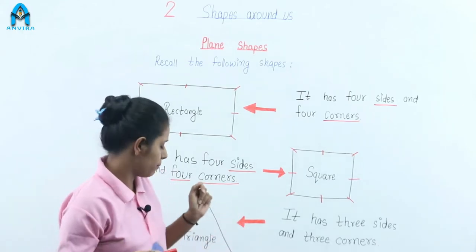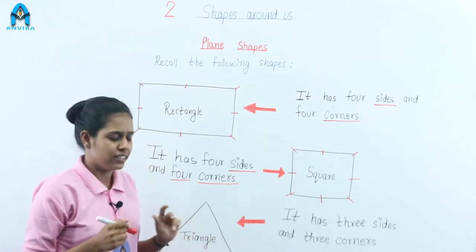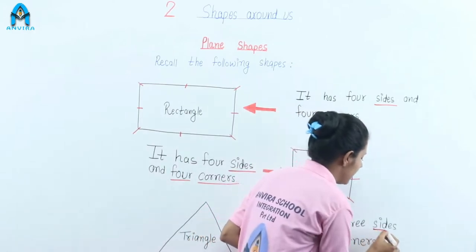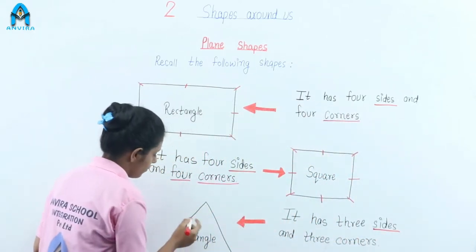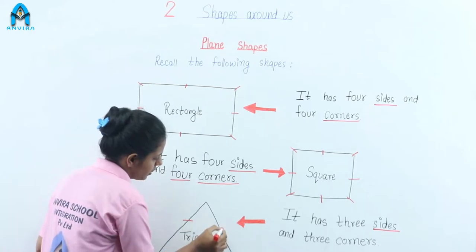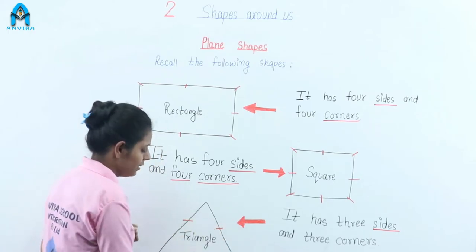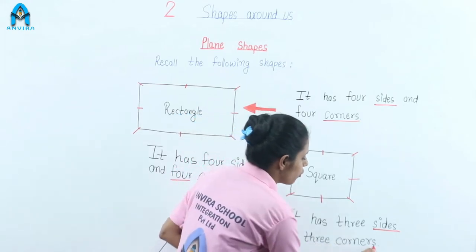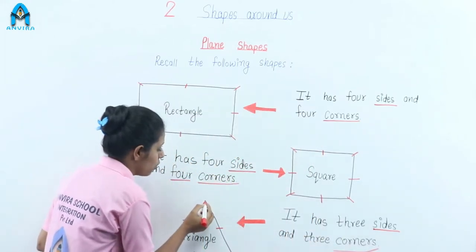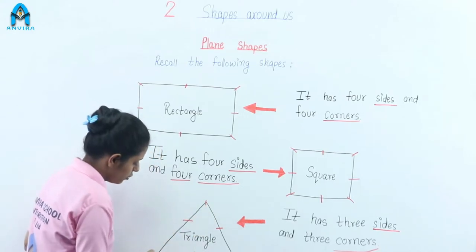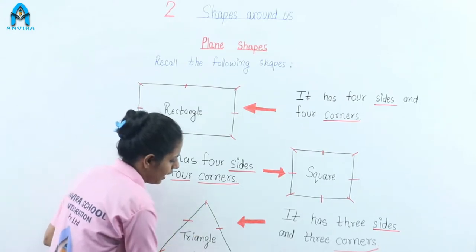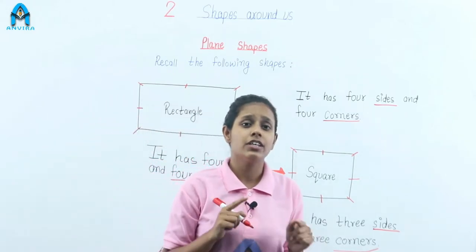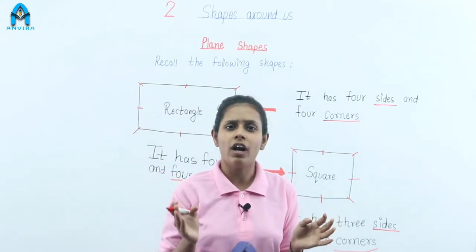Our third shape is a triangle. It has three sides: one, two, and three. And three corners: one, two, and three. With three sides and three corners, we draw a shape called a triangle.